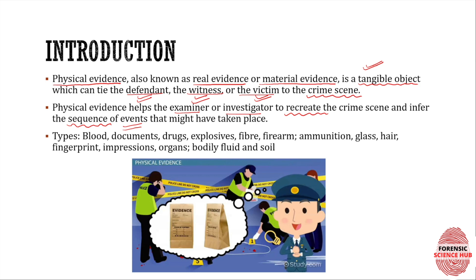There can be many types of physical evidences. The ones I'm going to discuss are: blood, documents, drugs, explosives, fiber, firearm and ammunition, glass, hair, fingerprint, impression, organ and bodily fluid, and soil. In this video, the first six will be discussed.